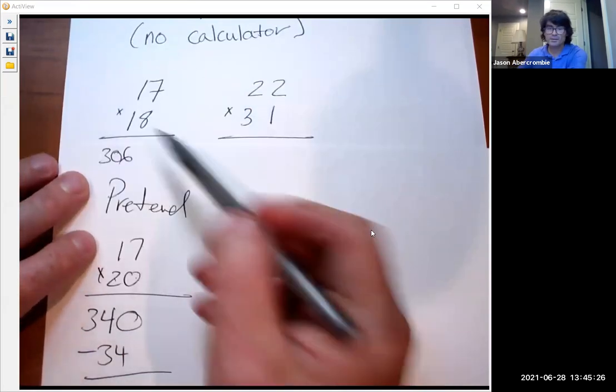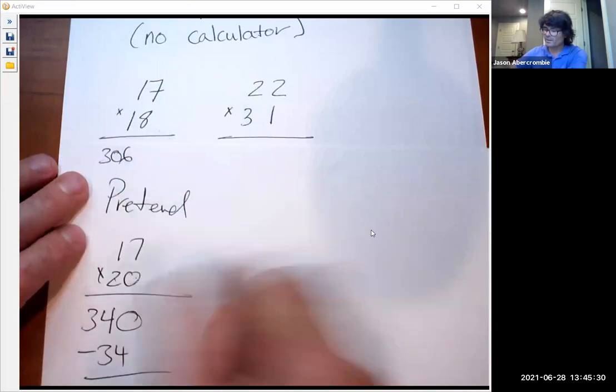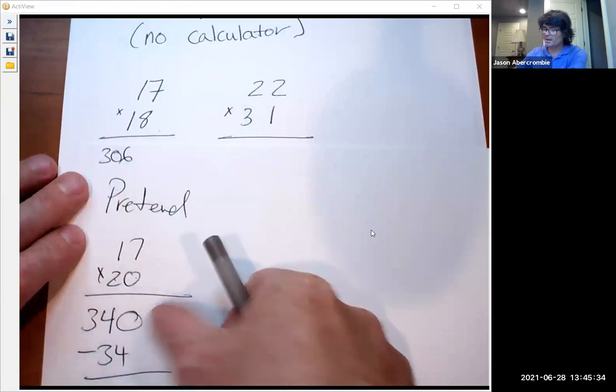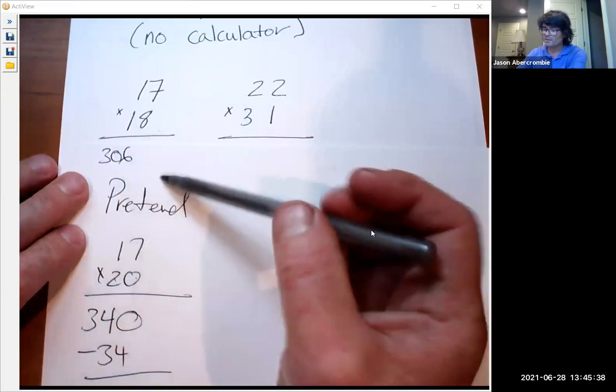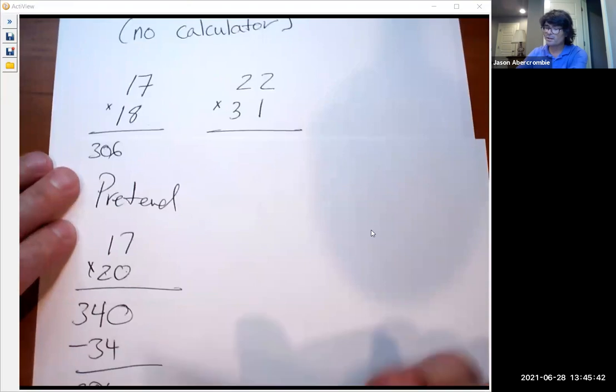So what I did, I rounded this up to an even number like 20, did 20 times 17. Basically that's 2 times 17, 34, add a zero. And then because I added 2 to 18 to make it 20, I said well we actually don't have 2 times 17, so I took off 34. Let's do that right here.